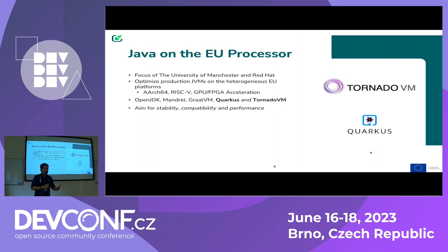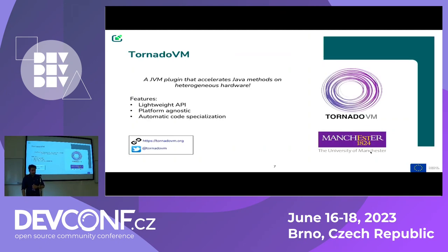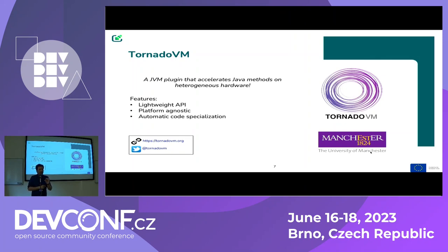TornadoVM is a JVM plugin. Although it's called VM, it's not a new VM — TornadoVM by itself doesn't run anything; it needs a host JVM. So it is a plugin. You have, say, Amazon Corretto, or Mandrel from Red Hat, or OpenJDK — you download it, plug in Tornado, and it gives you a lightweight API which you can use to automatically accelerate code on GPUs and FPGAs. Essentially it is an add-on on any virtual machine that supports JVM-CI, that we can use to automatically accelerate code on accelerators.